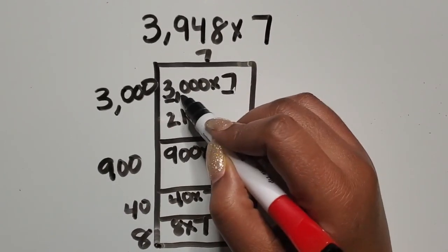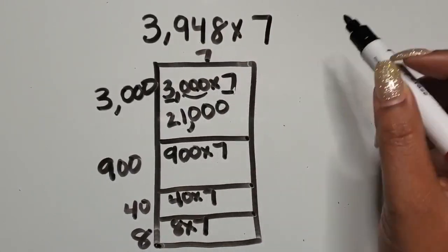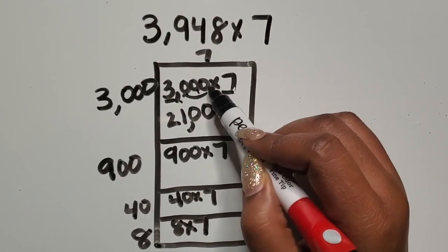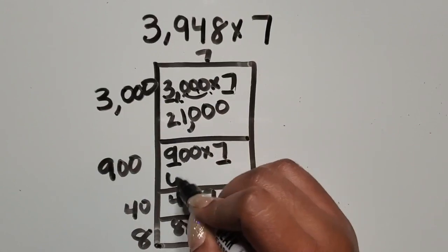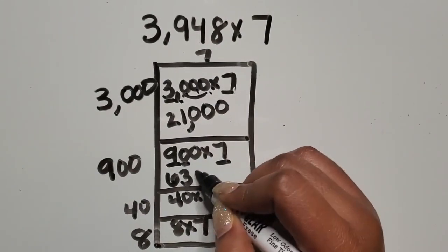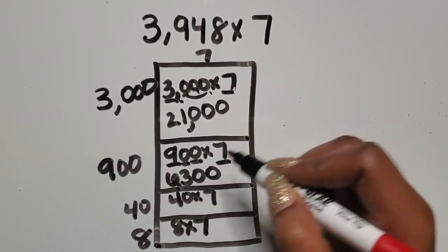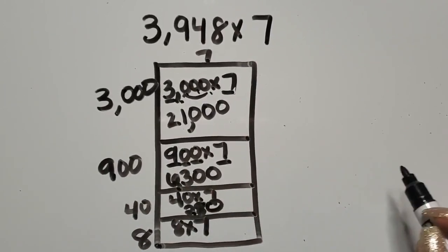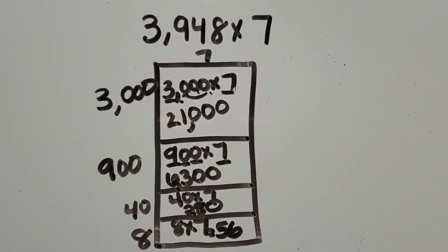Ten times greater would be 210. A hundred times greater is 2,100. A thousand times greater is 21,000 — we can look at it as a thousand times greater, or as ten times greater three times in a row. Nine times seven is 63. Ten times greater is 630. Ten times greater than that is 6,300. Four times seven is 28. Ten times greater is 280. Eight times seven is 56.